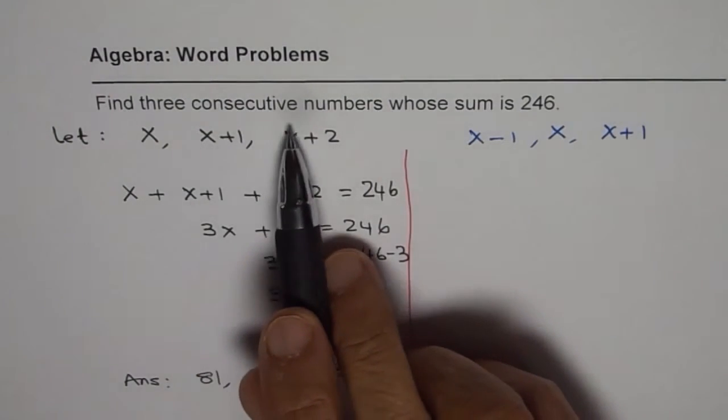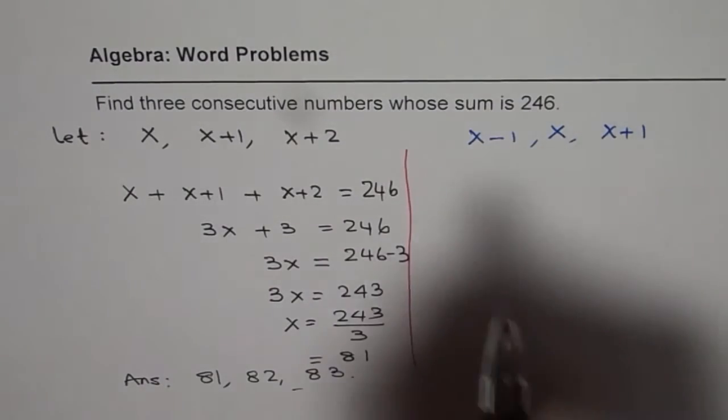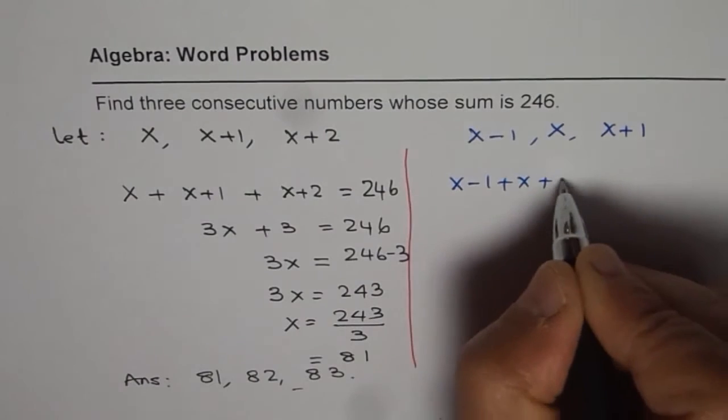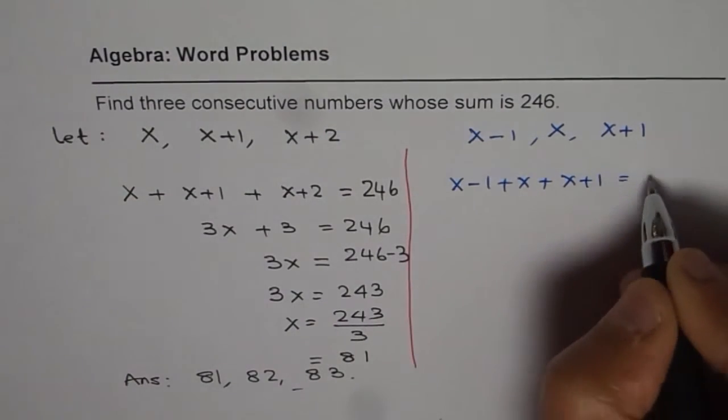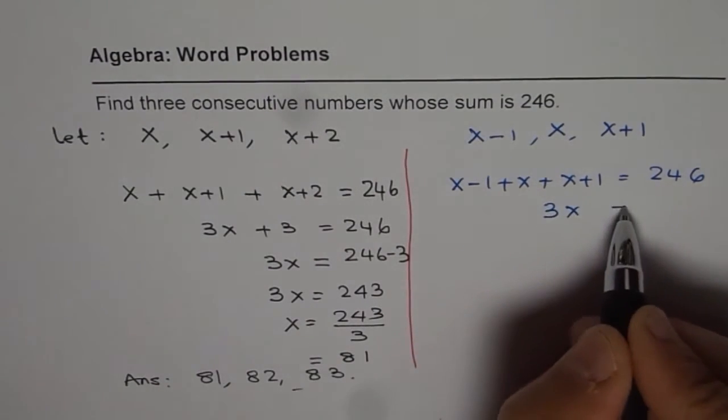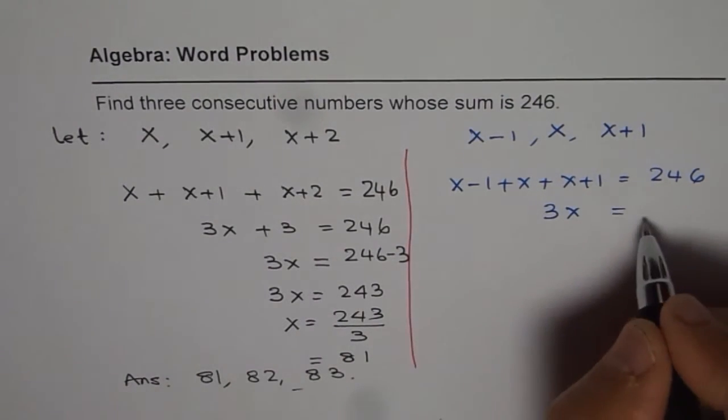Sum of three consecutive numbers is 246. Let's add them up. We get x minus 1 plus x plus x plus 1 equals 246. When we add, we get 3x, since minus 1 plus 1 is 0.